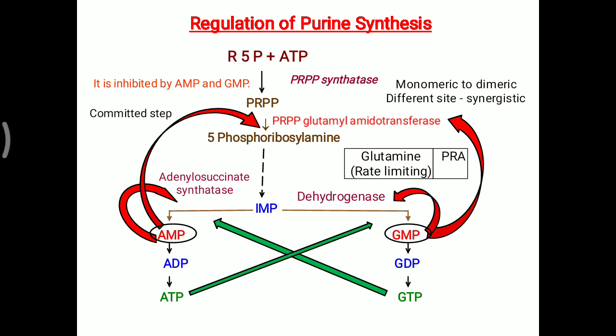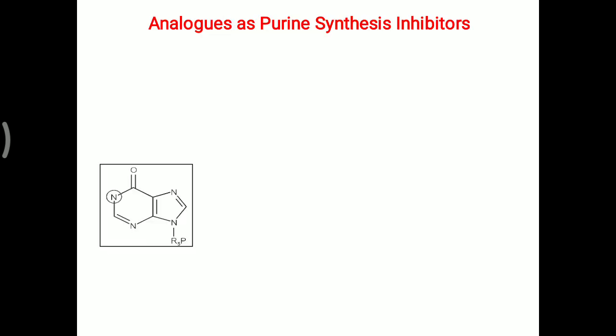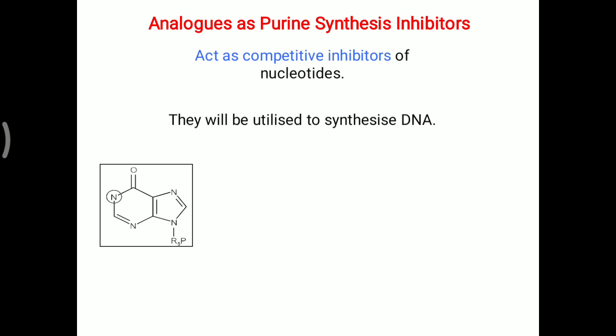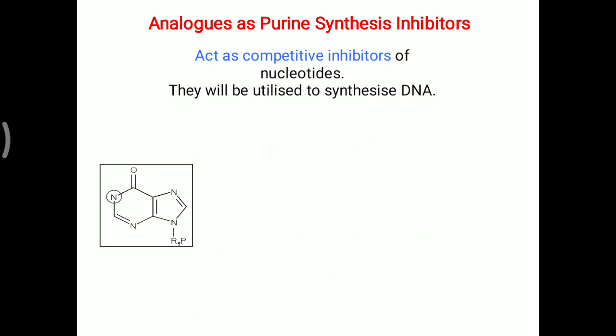That is how purine synthesis is regulated in our body. Regarding clinical importance, analogues of purines can be utilized for inhibition of purine synthesis. They work as competitive inhibitors of the nucleotide and will be utilized to synthesize DNA.